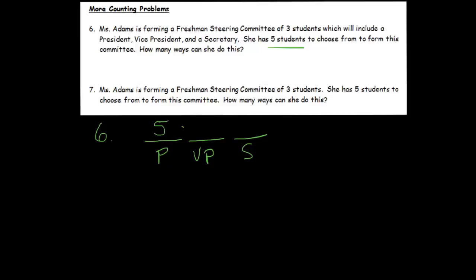And then for the vice president, now that I've chosen a president, there's only four options, and then at that point, there's only three for the secretary. So the answer is five times four times three, which is equal to 20 times three, which is 60.